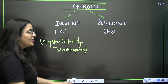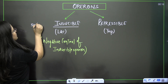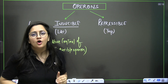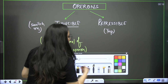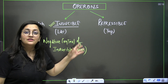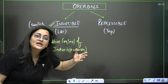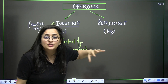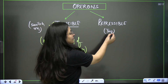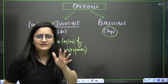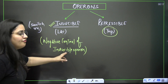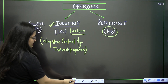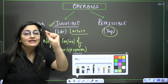To summarize: inducible means switching on a gene — by default the gene is off and we need to activate it. Repressible means switching off a gene — by default the gene is on and we need to suppress it. The lac operon is an inducible operon; lac stands for lactose.